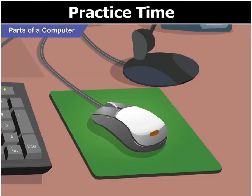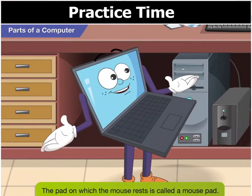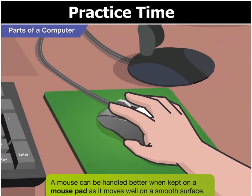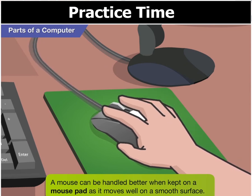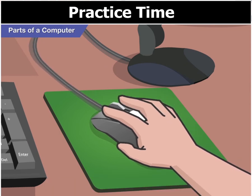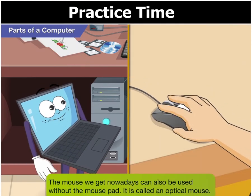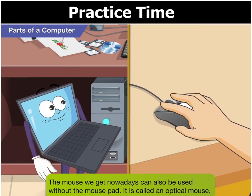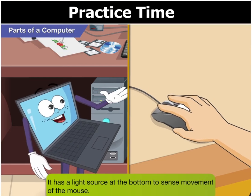Do you know what this pad below the mouse is for Goggle? This pad is called a mouse pad. A mouse can be handled better when kept on a mouse pad, as it moves well on a smooth surface. However, the mouse we get nowadays can also be used without a mouse pad. It is called an optical mouse. It has a light source at the bottom to sense movement of the mouse.